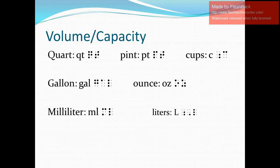The second set has the units of volume or capacity. So we have here quart — the abbreviation for quart is letters Q and T — pint (letters P and T), cup (letter C alone), gallon (letters G-A-L or gal), ounce (letters O and Z), milliliter (letters M and L), and liter (letter L alone).